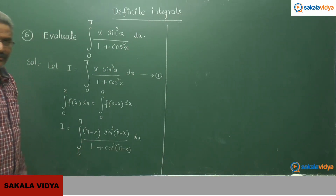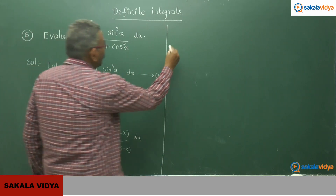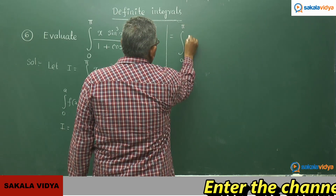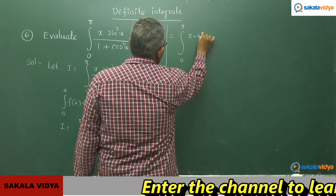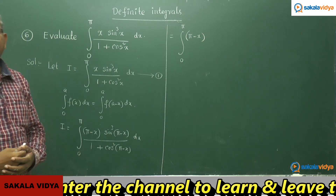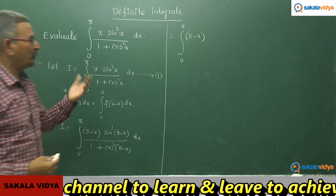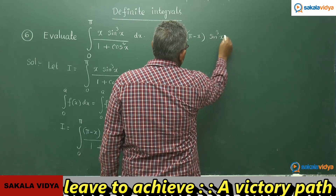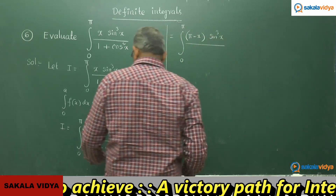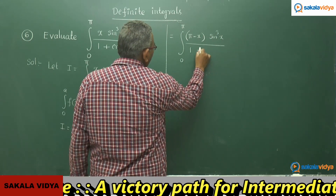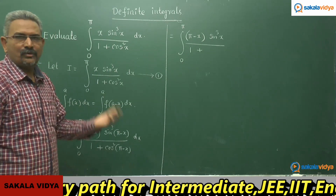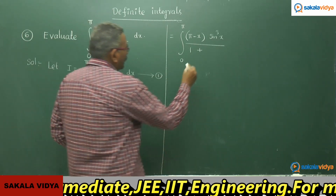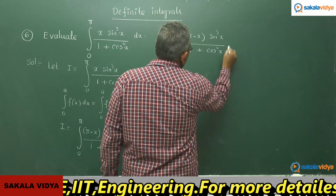This now equals the integral from 0 to pi of (pi minus x)·sin³x divided by (1 + cos²x) dx, since sin³(pi minus x) gives sin³x only, and (minus cos x)² gives positive cos²x.